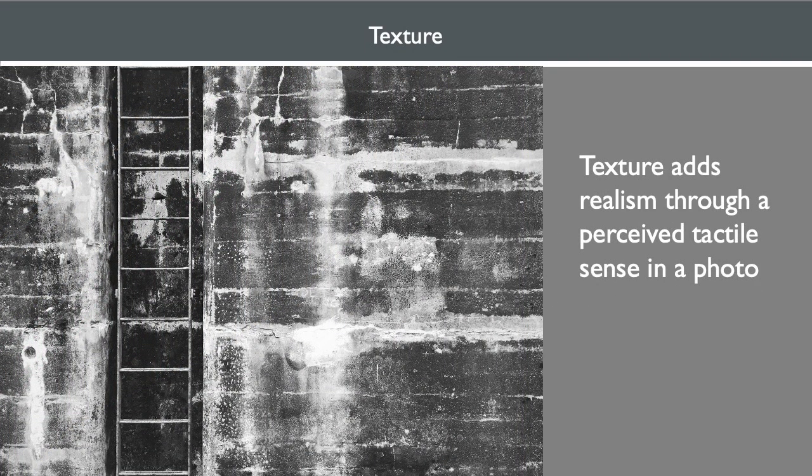Texture adds realism through a perceived tactile sense in a photograph. Sharp or direct light, also known as hard light, highlights texture. Side lighting also highlights texture, depending on the intensity. Open shade can reduce the amount of visual texture — most portraits taken in the environment use open shade to decrease texture on skin, whereas direct lighting can increase texture on skin, such as wrinkles.